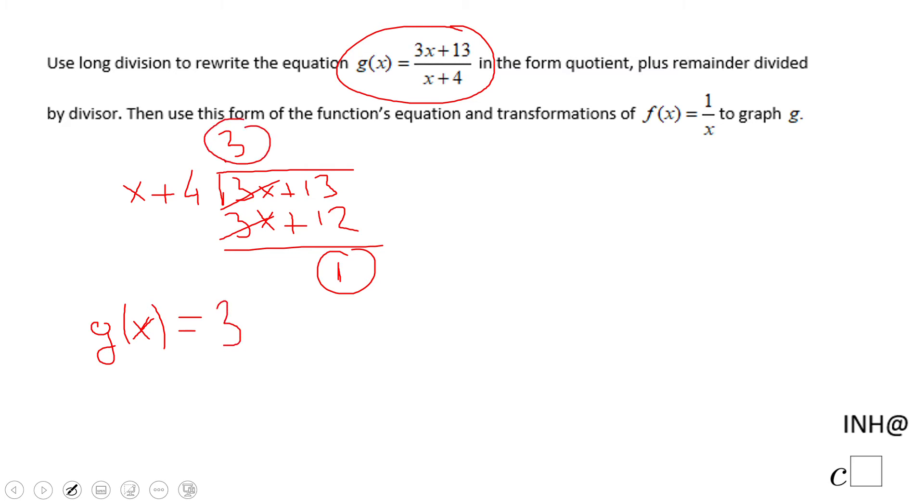the quotient—plus the remainder which is 1 over what we divided by, which is x + 4. These two are equivalent. You see, the long division helps us to get this function.